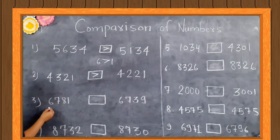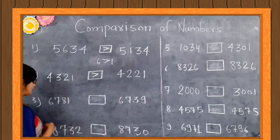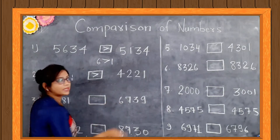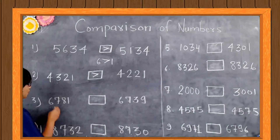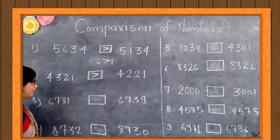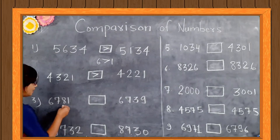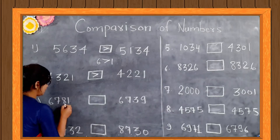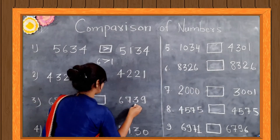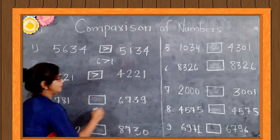Now 6,731 and 6,739. In the 1000 place, the digit is 6 and 6. So we compare by the 100 place. Moving to the 10 place, the digit is 8 and 3. So 8 is bigger than 3.